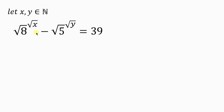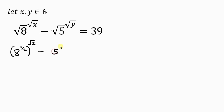We are to look for the values of x and y. Our first step is to write the square root of 8 as 8 to the power of half. Remember, the power of half also means square root. So that's our first step — we raise it to the square root of x, minus 5 to the power of half, raised to the power of the square root of y, equal to 39.